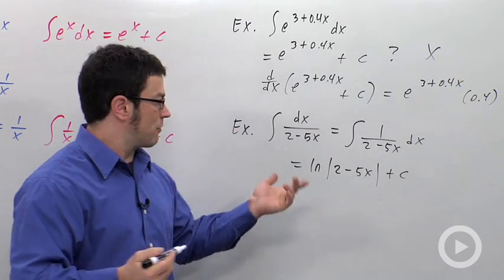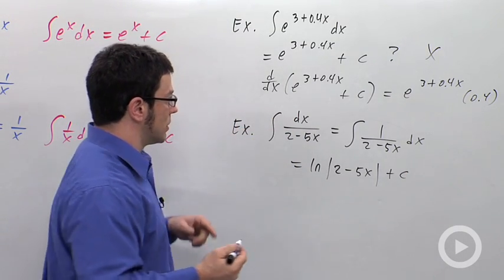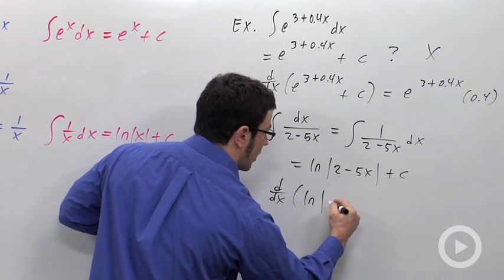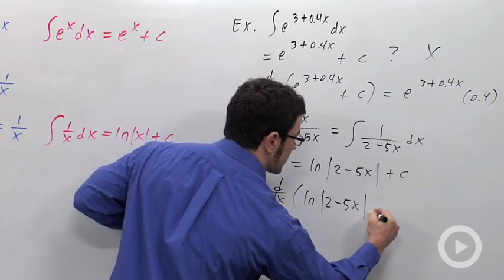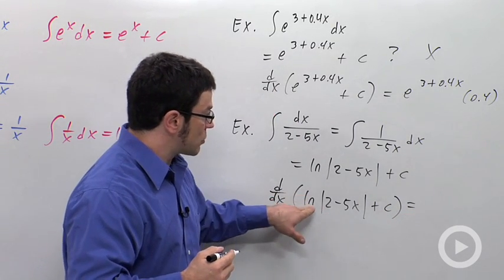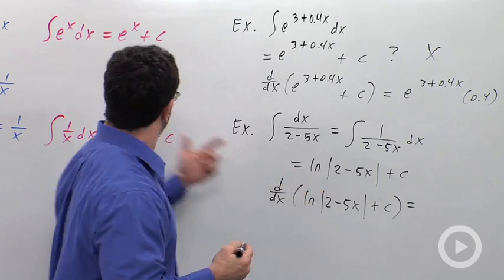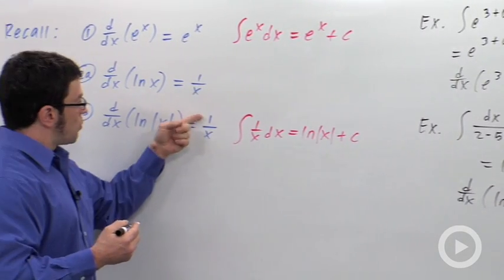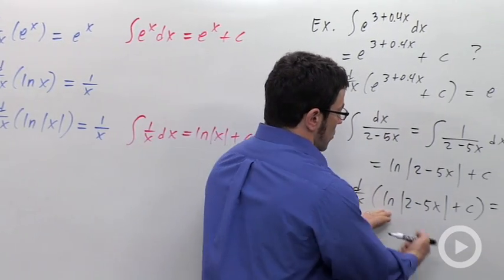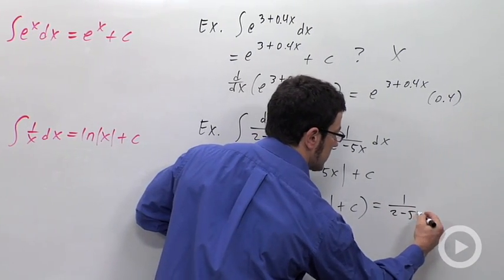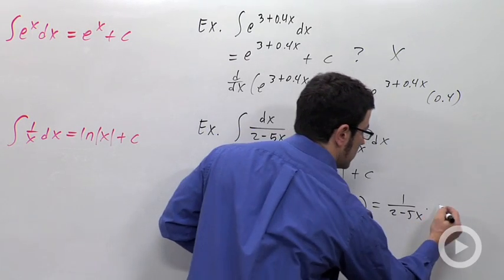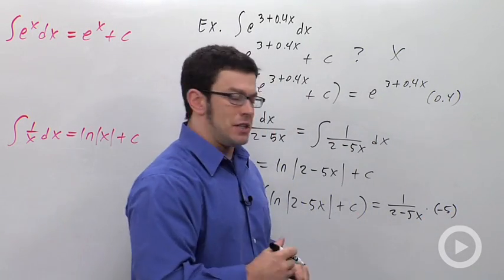Well, you'll see it's not. Let's differentiate the answer and see if we get the original function back again. The derivative of natural log of the absolute value of 2 minus 5x plus c is, well, first of all, the derivative of natural log of the absolute value of something is just from this formula back here. It's just 1 over that something. But here, we'll have to use the chain rule. So it's 1 over 2 minus 5x times the derivative of 2 minus 5x, which is negative 5.